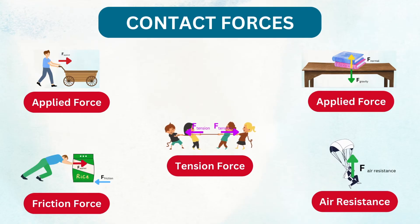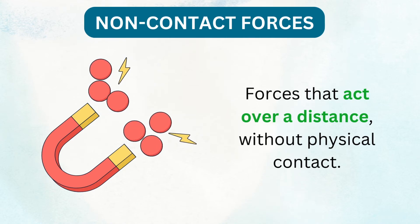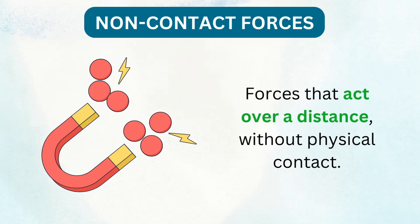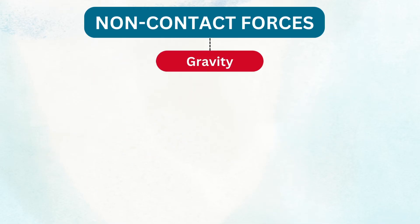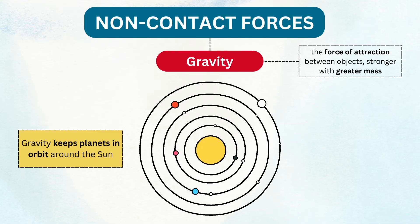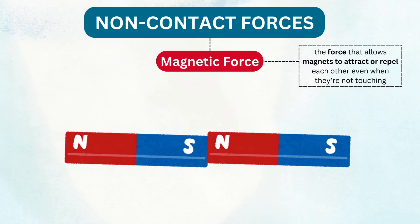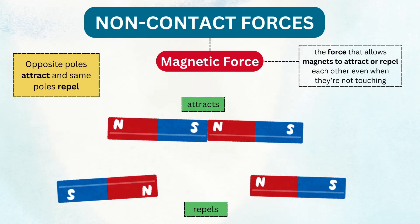Now, let's talk about non-contact forces — forces that can act over a distance without any physical contact between objects. One of the most familiar and powerful of these is gravity, the invisible force that keeps our feet planted on the ground and the planets orbiting around the sun. Have you ever tried playing with magnets? If you bring two pieces of magnets together, opposite poles attract and the same poles repel. Magnetism is the force that allows magnets to attract or repel each other, even when they are not touching.